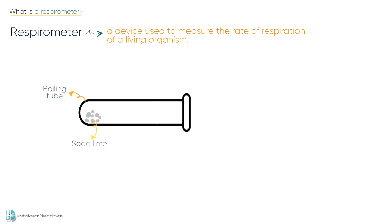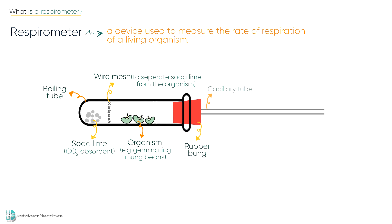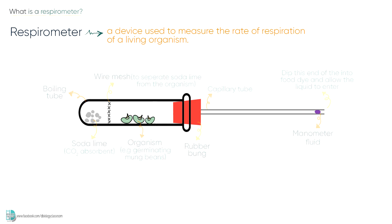Firstly, weigh 10g of soda lime granules and place them into the boiling tube. Soda lime is a carbon dioxide absorbent. Place wire mesh or muslin cloth into the tube to separate them from the organism you are going to place in the tube later. Then put in the organism you would like to investigate, for example, germinating mung beans. Close the boiling tube using a rubber bung with a capillary tube — make sure it is airtight. Dip the end of the capillary tube into colored liquid such as food dye and allow the liquid to enter. The food dye in the capillary tube acts as our manometer fluid. You will observe that the manometer fluid starts moving towards the boiling tube.